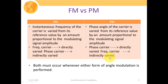Since angle is the combination of both frequency and phase, it is very difficult to observe which particular type of angle modulation is being used — whether it is phase or frequency modulation. Both must occur whenever either form of angle modulation is performed. So the wave we obtain is actually a hybrid of frequency modulation and phase modulation, irrespective of which technique we are utilizing.